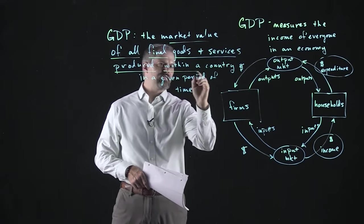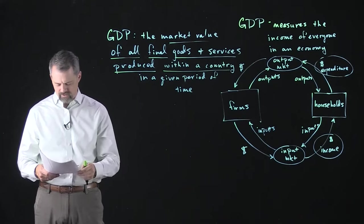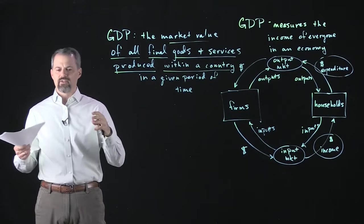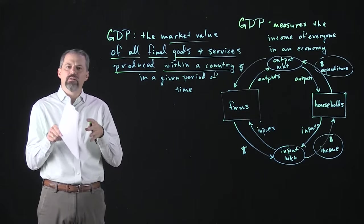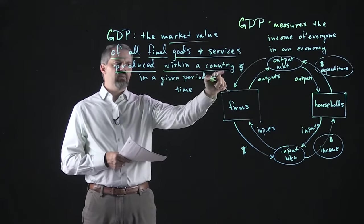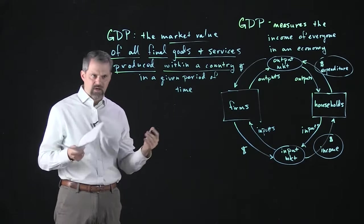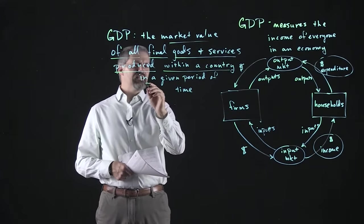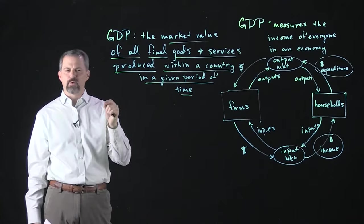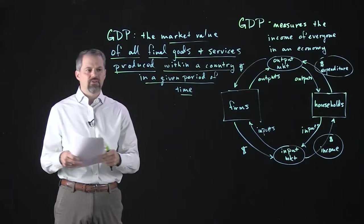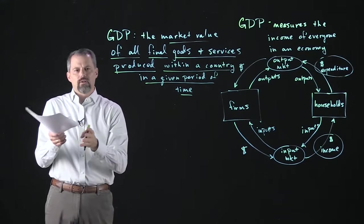Within a country means we're only thinking about goods and services produced within the geographic confines of the country — in our case, the United States. And 'in a given period of time' means we're thinking about the market value of all final goods and services produced within the country over maybe the last year. We can also think about GDP for a quarter — that's three months.